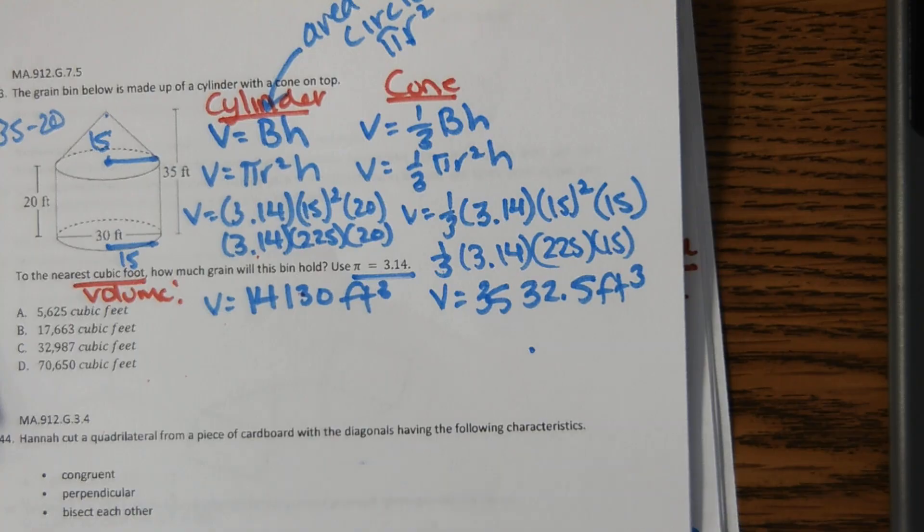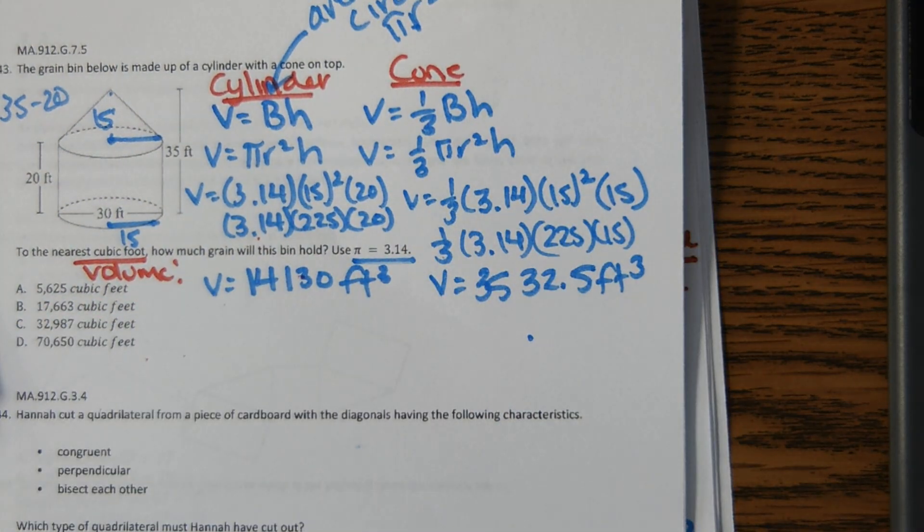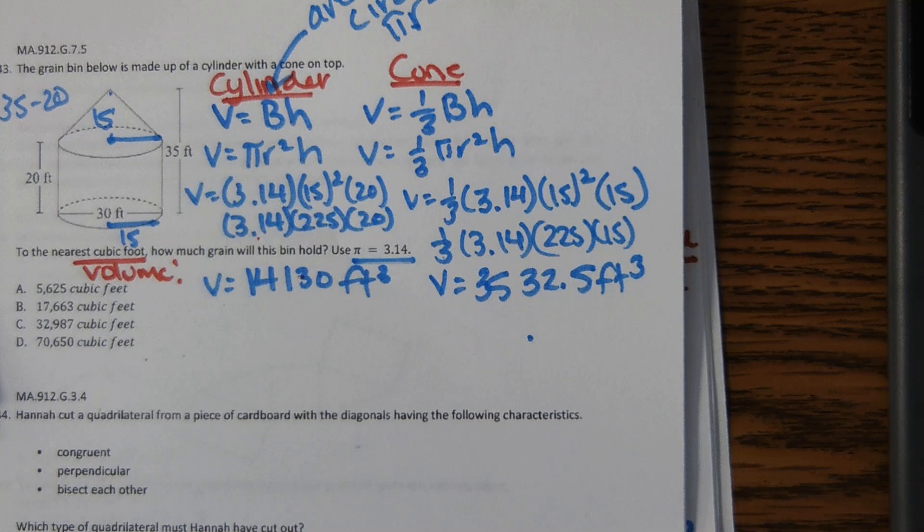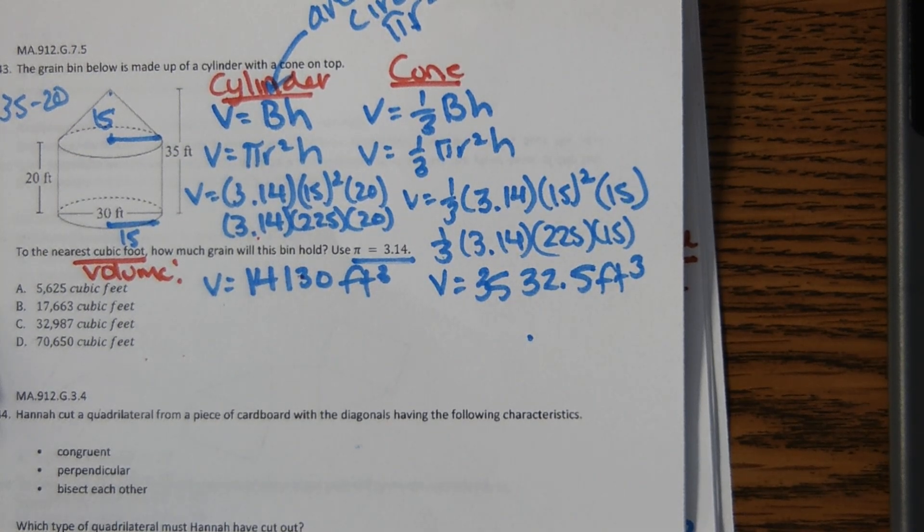So where people sometimes get stuck is with this equation right here. If you are second guessing yourself in any way, just use the EOC calculator. It'll make it a whole lot easier and you don't have to worry about order of operations or making errors in the same way. So you can type it in like this: one third times 3.14, and then the radius was 15 squared, and then the height was 15. So you can put in the whole thing and it gives you the answer. So that way you don't have to worry about order of operations or how to put fractions in or anything like that.